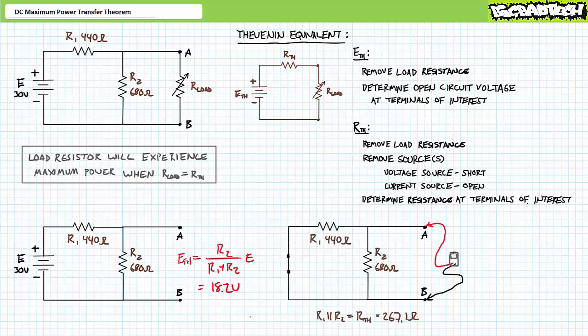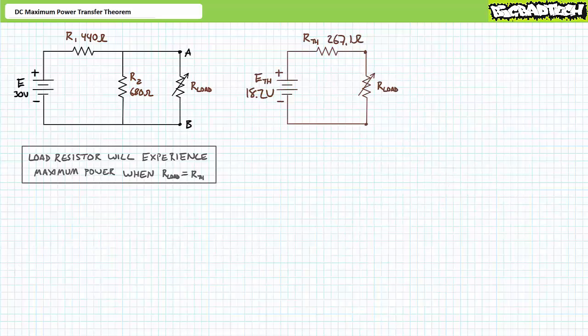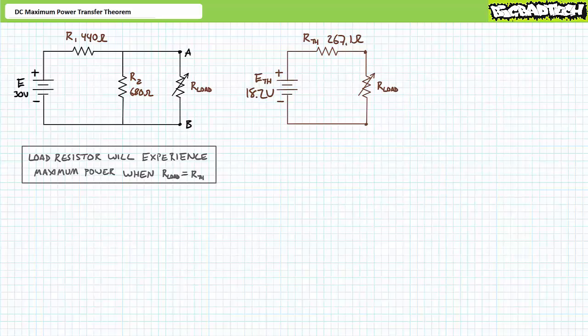To solve for Thevenin's equivalent resistance, we remove the load resistor and the source and determine the resistance at the terminals of interest. With the load removed and the voltage source replaced with a short circuit, an ohmmeter placed at terminals A and B would see R1 in parallel with R2, for a Thevenin's equivalent resistance of 267.1 ohms. The Thevenin's equivalent circuit seen by the variable load resistor is therefore an 18.2-volt source in series with a 267.1-ohm resistor and R-load.